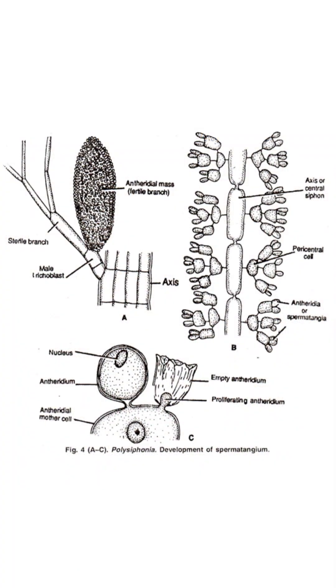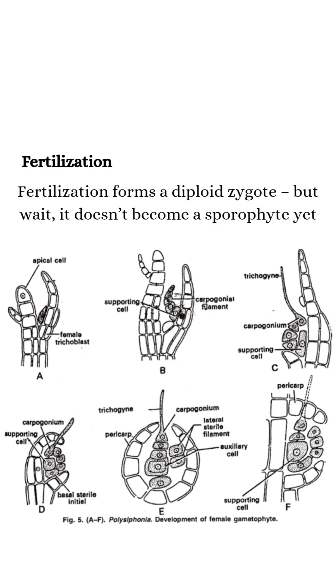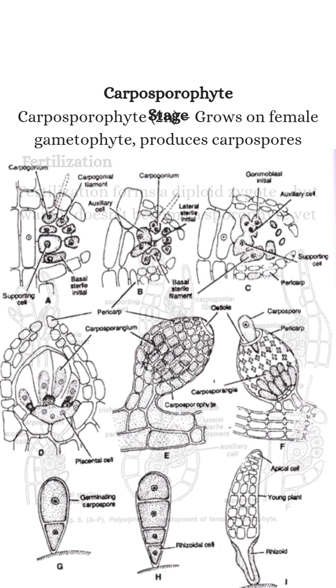The male gametes, called spermatia, lack flagella and rely on water currents to reach the female. Once fertilization occurs, a diploid zygote forms and sticks to the female gametophyte.